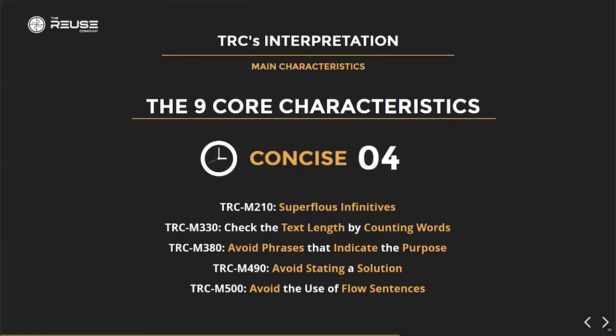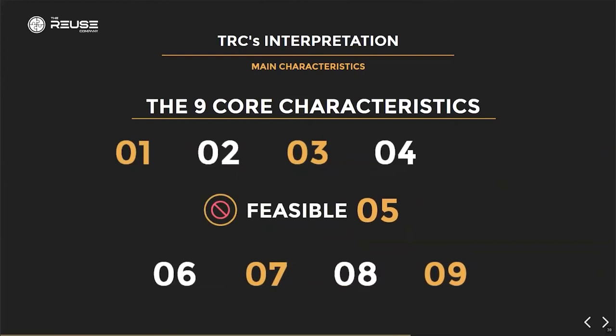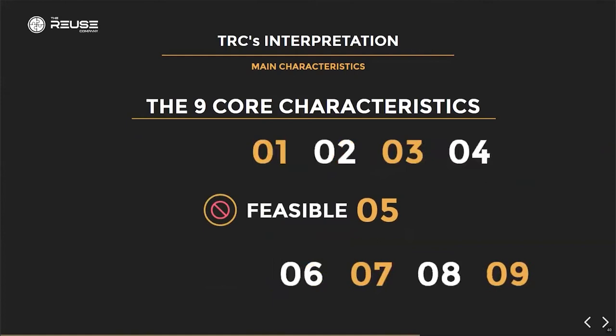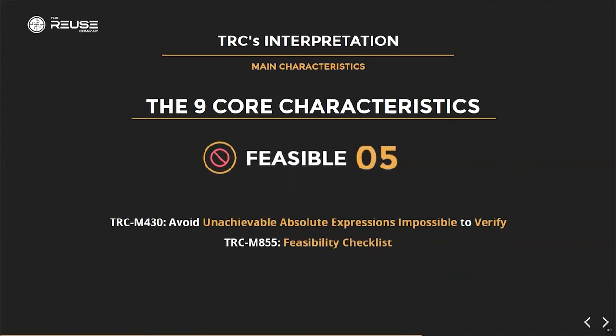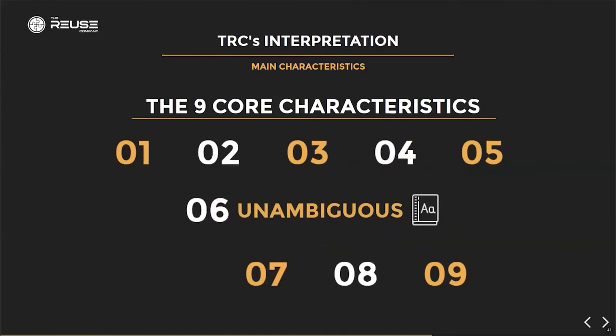The fifth characteristic is feasibility — we must be able to realize whatever is specified in the requirements with an acceptable risk. That last part is important because many things can technically be done but with a huge amount of resources, making them not viable. Metrics include: avoiding unachievable absolute expressions that are impossible to verify, and a feasibility checklist with a set of questions to evaluate whether a requirement is feasible.